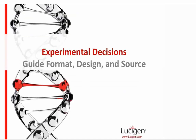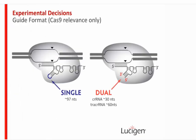Moving to guide format, design, and source: Cas9's guide RNA consists of the CRISPR RNA and the tracer RNA, but these can be fused into a single guide RNA — one RNA species used in experiments. Alternatively, you can use the dual RNA system where CRISPR RNA and tracer RNA are separate, requiring a quick annealing step. This is largely a matter of preference.